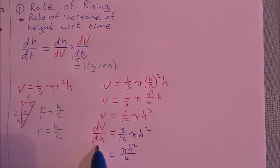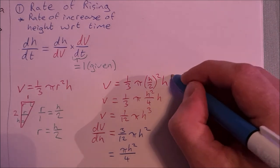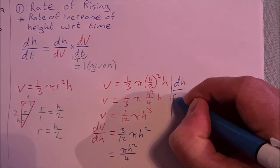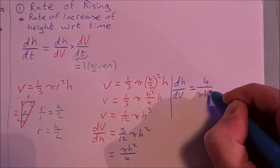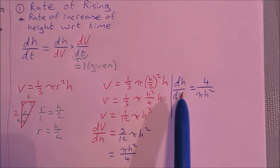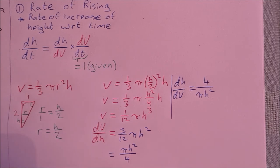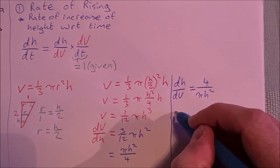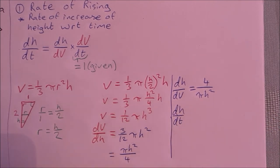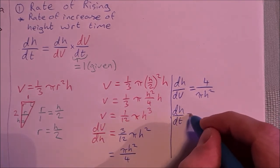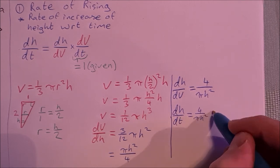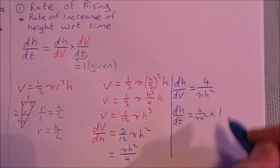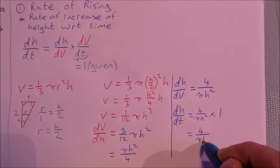That's dv/dh, but I'm actually looking for dh/dv — I just invert it. So dh/dv = 4/(πh²). Now I have dh/dv and I already have dv/dt, so I can substitute both into the chain rule to get dh/dt. That equals dh/dv times dv/dt = 4/(πh²) × 1 = 4/(πh²).